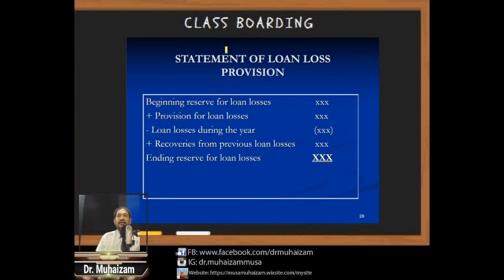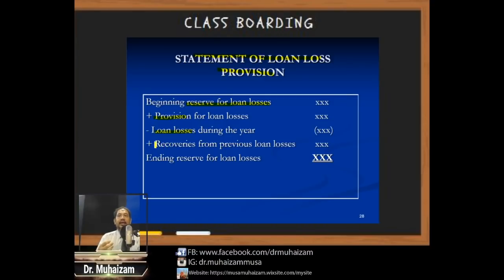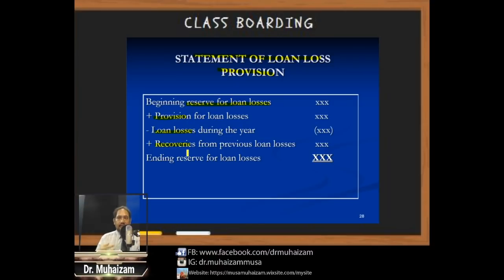The statement of loan loss provision shows the opening reserve for loan losses, plus the provision added during the year, less actual loan losses incurred, plus recoveries — amounts collected from previously defaulting borrowers who were able to repay — arriving at the ending reserve for loan losses.